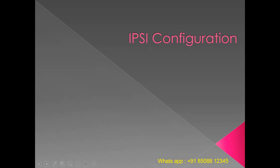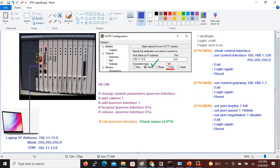Today we will discuss how to configure IPSY in Avaya G650 gateway. In the G650 gateway, the first slot will always be used for IPSY. The IPSY card contains two Ethernet ports: one is the service port and the other is the network port, which connects on the switch side.